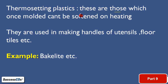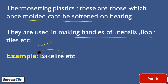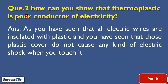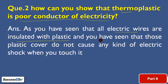Thermosetting plastics are those which, once molded, cannot be softened on heating. They are used for making handles of utensils, floor tiles, etc. Example: Bakelite. Second question: how can you show that thermoplastic is a poor conductor of electricity? As we all know, all electric wires are insulated with a plastic cover, and those plastic covers do not cause any electric shock when you touch them — this proves that thermoplastic is a poor conductor of electricity.